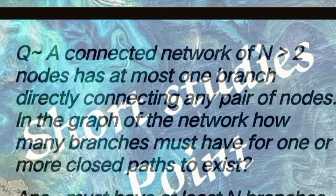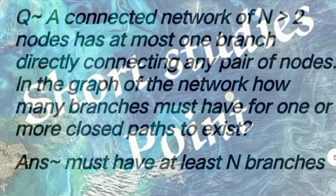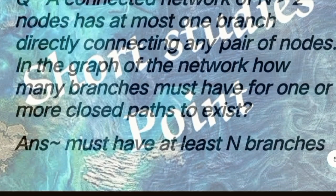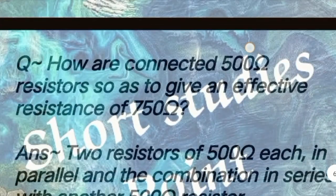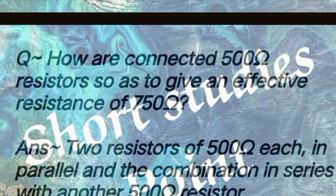Next question: What is the condition for the validity of Ohm's law? Answer: Temperature should remain constant. Next question: A connected network of n greater than two nodes has at most one branch directly connected to any pair of nodes. How many branches must it have for one or more closed paths to exist? Answer: At least n branches.